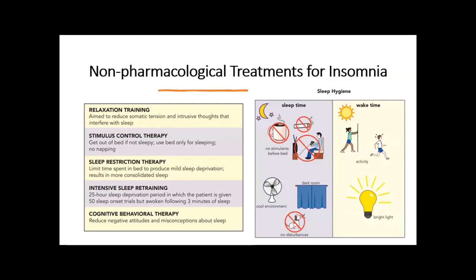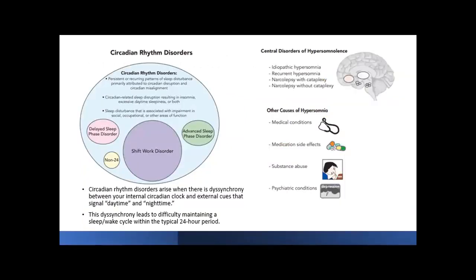Circadian rhythm disorders arise when there is a dyssynchrony between your internal circadian rhythm — the circadian clock — and external cues that signal daytime and nighttime, leading to difficulty maintaining a sleep-wake cycle with a typical 24-hour period. Central disorders of hypersomnia include idiopathic hypersomnia, recurrent hypersomnia, narcolepsy with cataplexy, and narcolepsy without cataplexy. Other causes of hypersomnia include medical conditions, medication side effects, substance abuse, and psychiatric conditions.